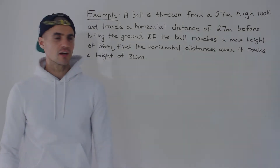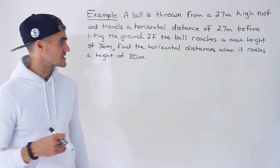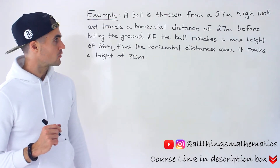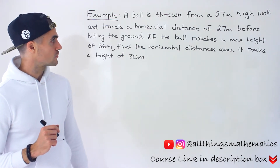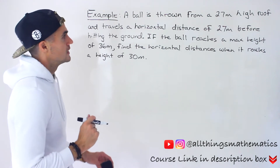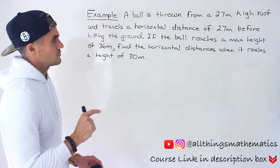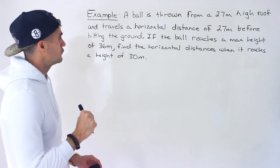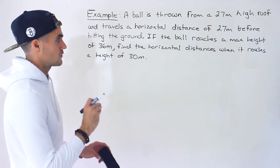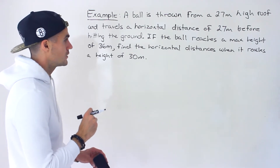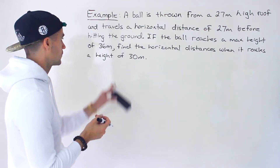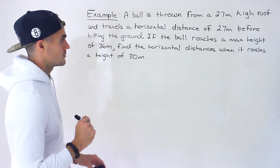Welcome back everyone, Patrick here, and in this next video we have a fairly tricky quadratic word problem to go through. So a ball is thrown from a 27 meter high roof and travels a horizontal distance of 27 meters before hitting the ground. If the ball reaches a max height of 36 meters, find the horizontal distances when it reaches a height of 30 meters.